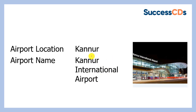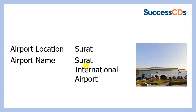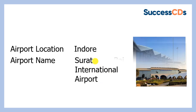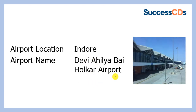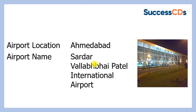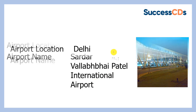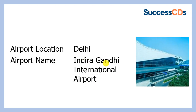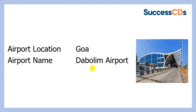Kannur International Airport at Kannur. Next we have Surat International Airport at Surat. Devi Ahilyabhai Holkar Airport at Indore. Kochi International Airport at Kochi. Sardar Vallabhbhai Patel International Airport at Ahmedabad, and Indira Gandhi International Airport at Delhi.